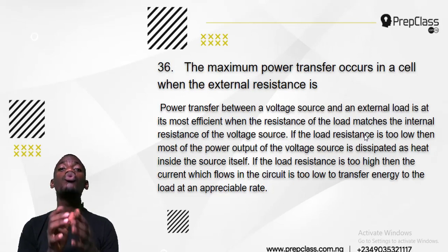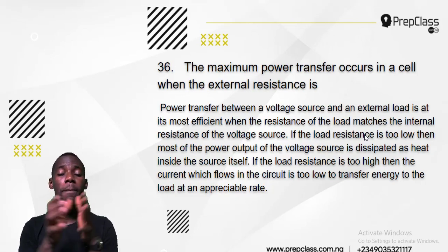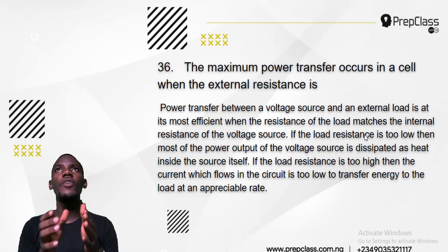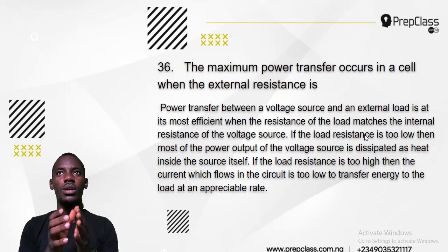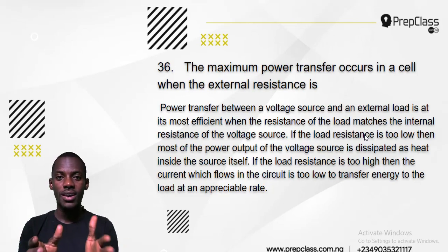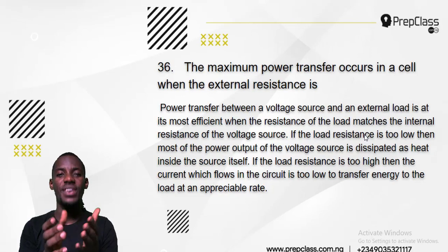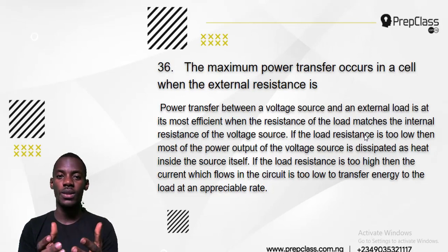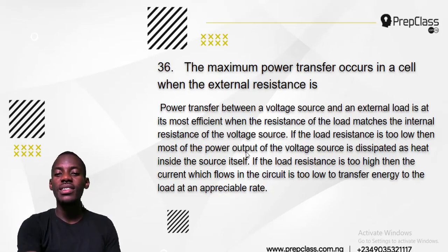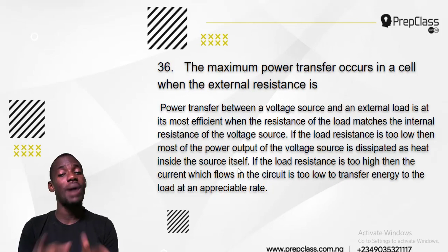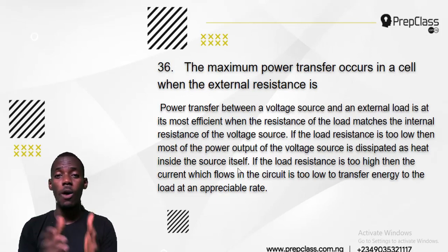What will happen? The output of the voltage source is dissipated inside the source. That means there will be a lot of waste and damage — an imbalance of power. Some generators make a lot of noise when the load is too low; there will be instability and there will not be maximum power transfer. But if the load resistance is too high — say you put on a small generator and connect a refrigerator and all the heavy machines at home — the current flowing is too low to transfer energy to the load at an appropriate rate.